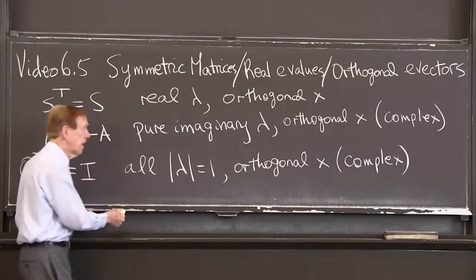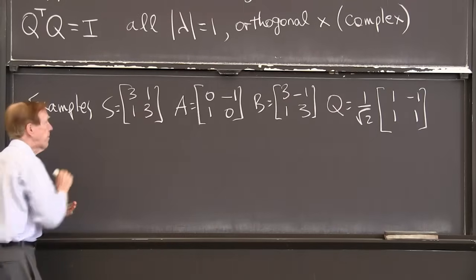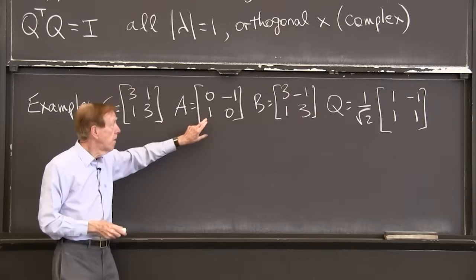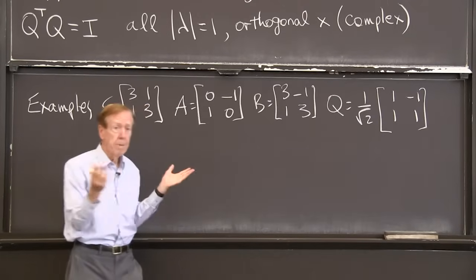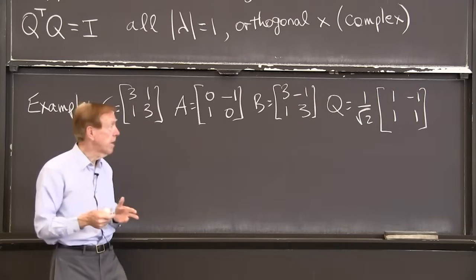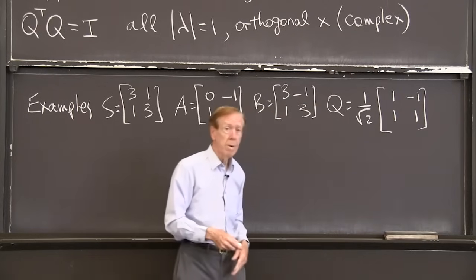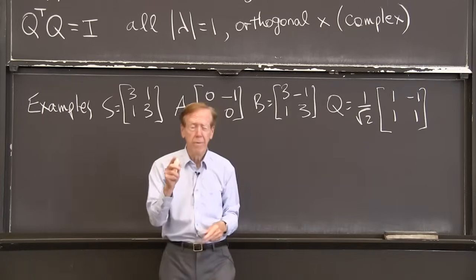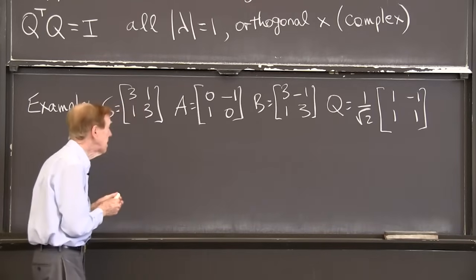I'll just have an example of every one. There's a symmetric matrix. There's an anti-symmetric matrix. If I transpose it, it changes sign. Here is a combination, not symmetric, not anti-symmetric, but still a good matrix. And there is an orthogonal matrix, orthogonal columns. Those columns have length 1. That's why I've got the square root of 2 in there.